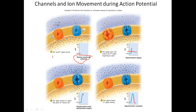When we hit negative 55 — the threshold — the sodium voltage-gated channels and the potassium voltage-gated channels open. The sodium ones open faster, so sodium rushes in down its concentration gradient into the cell. Those positive sodium ions make the inside of the cell more positive — that's depolarization.